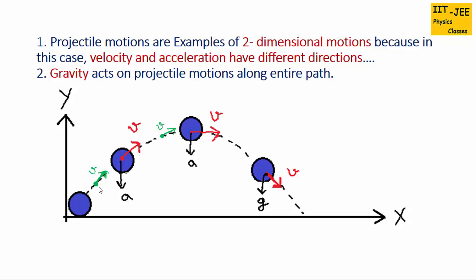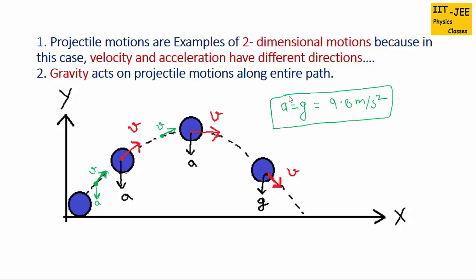When an object is in projectile motion, gravity always acts downward — gravity is the gravitational acceleration. So the acceleration on the object is gravity, which equals g, always 9.8 meters per second squared. Gravity always acts downward pulling the object downward, so the acceleration vector points downward.